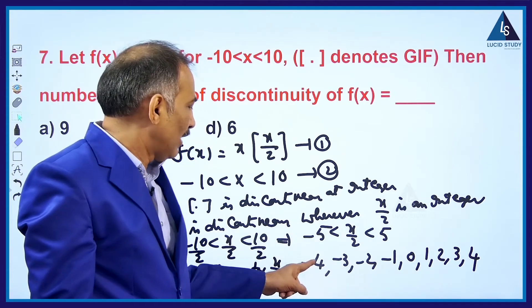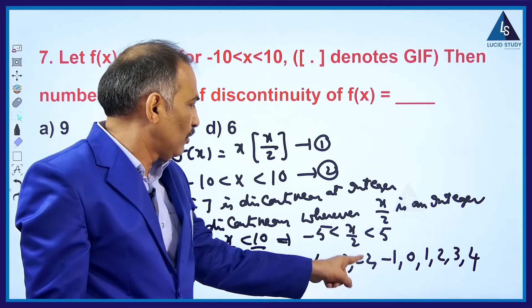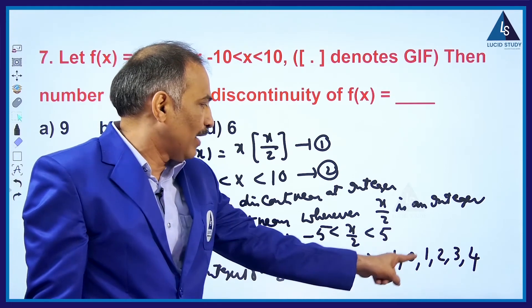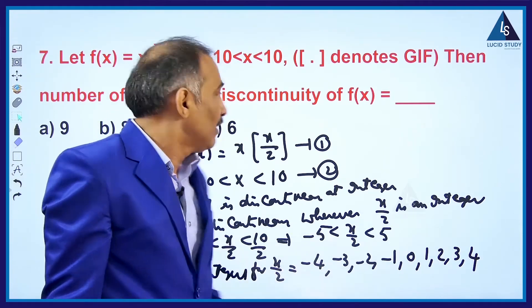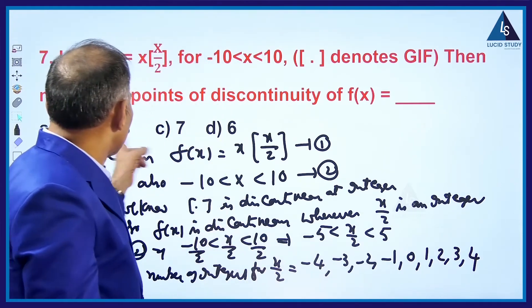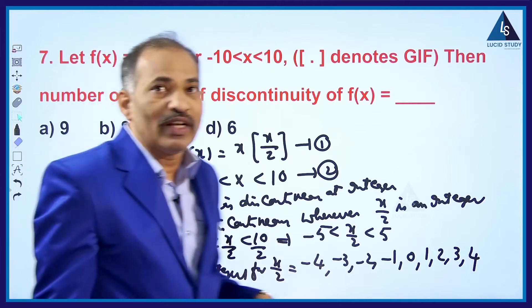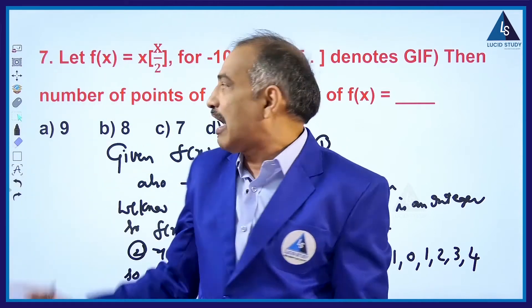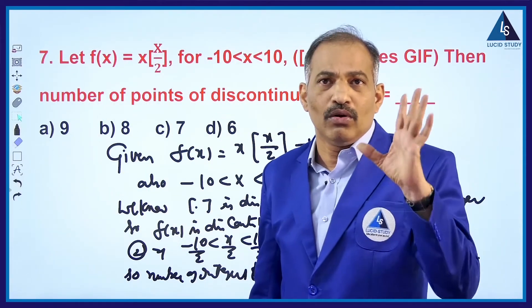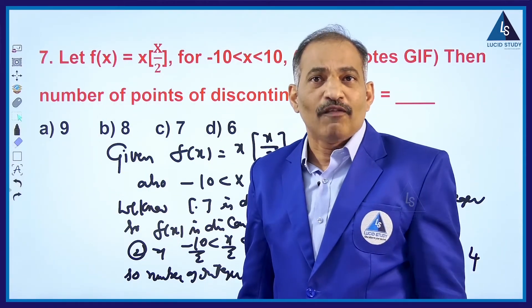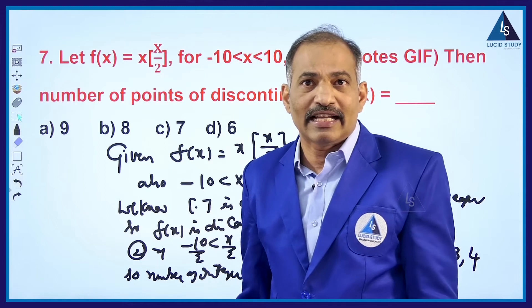Total, how many values? That gives 9 values. But observe closely, students — one of the options is 9. But don't immediately go for the first option as the correct answer.